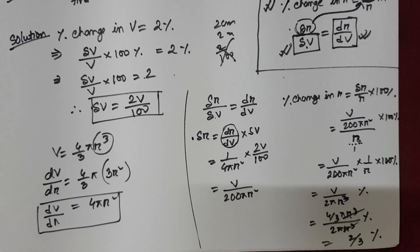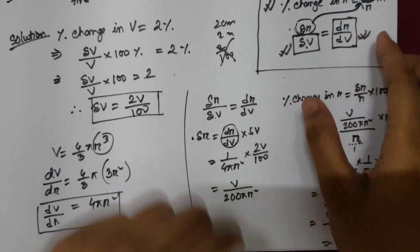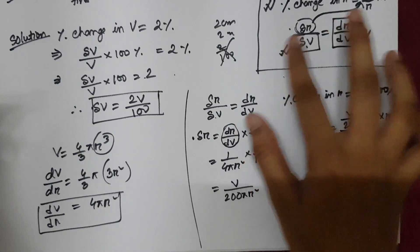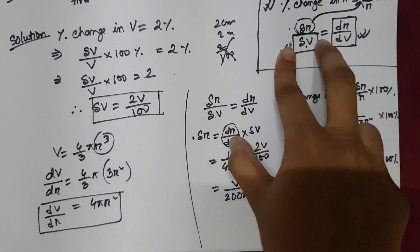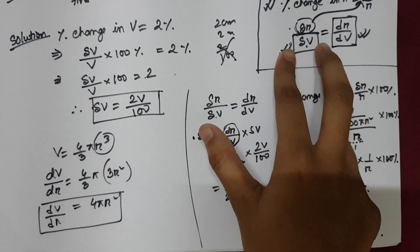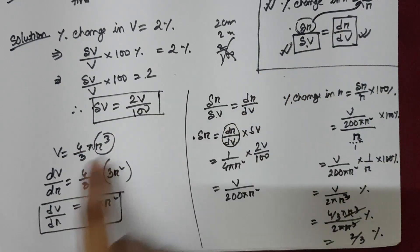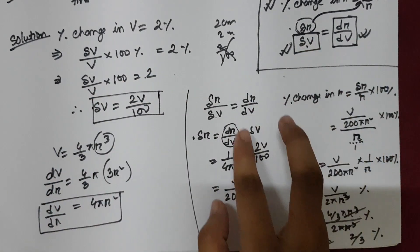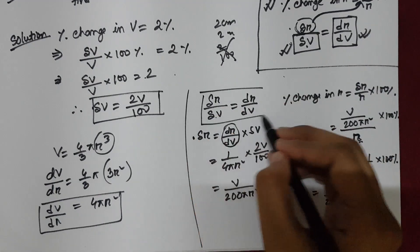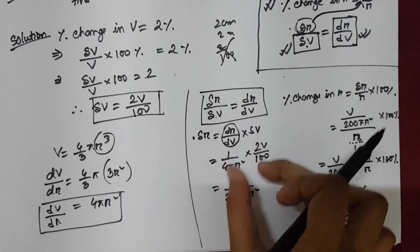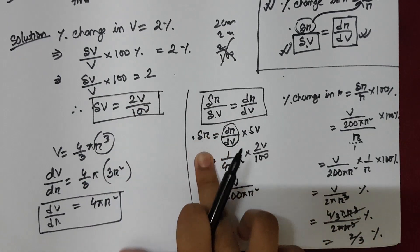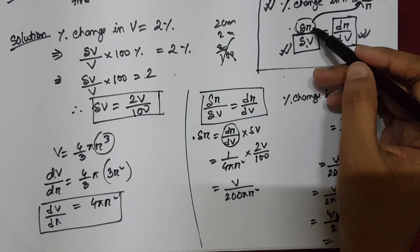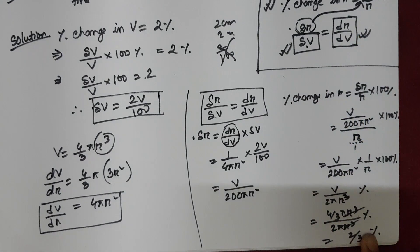Maths of approximation are not that complicated. All you need to do is write down the formula and find out the values you need. By writing the formula, we knew we had to find del v and dr by dv. After differentiating volume with respect to radius, I substituted those values to get del r. That del r was then substituted into the percentage change formula to get the final answer of 2/3 percent.